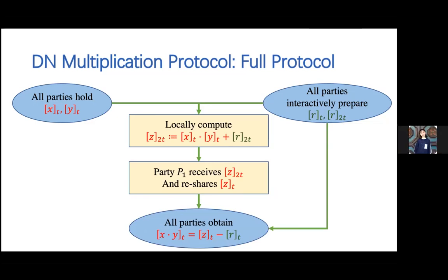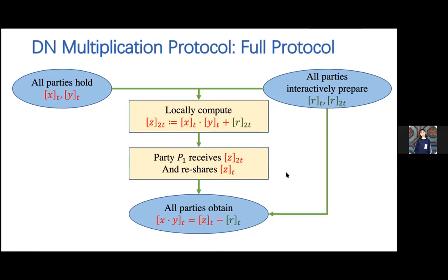[Question from chat: Don't we need to assume a broadcast channel to get T less than half of N?] A short answer is that we don't need it in this talk, because we allow the adversary to abort the protocol at any time. If we want to ensure the computation finishes successfully, then we would need the broadcast channel. But here we allow the computation to be aborted during execution.